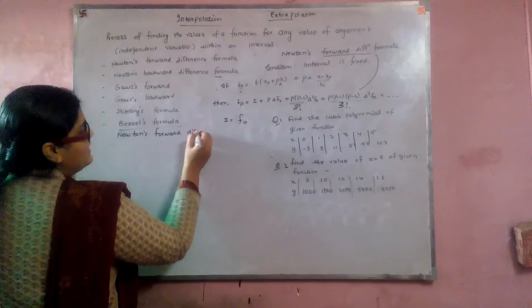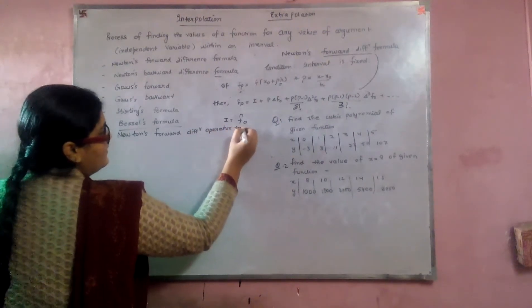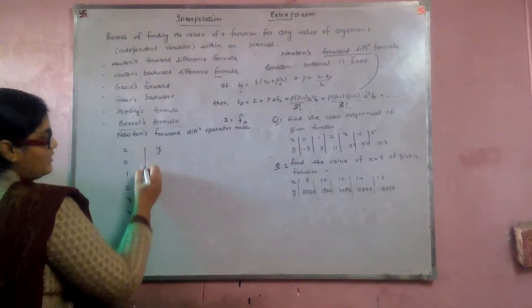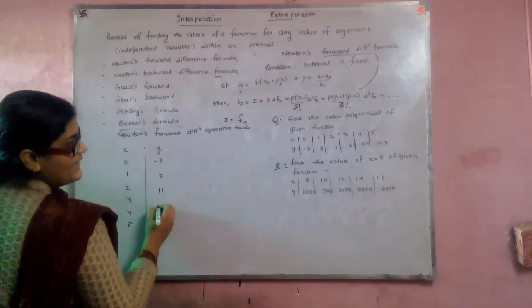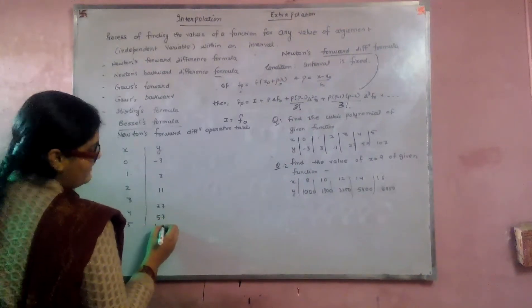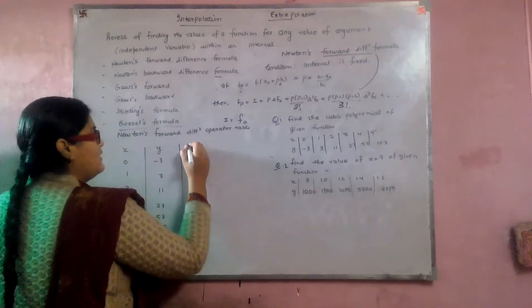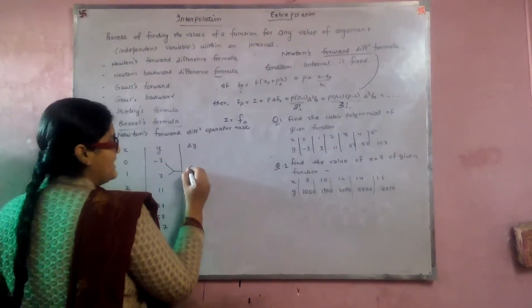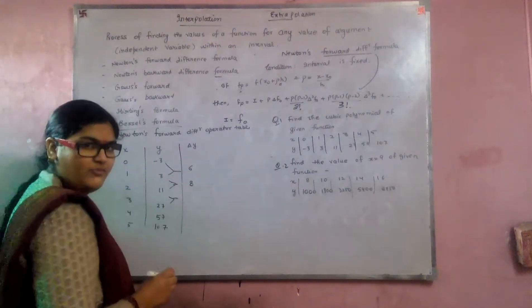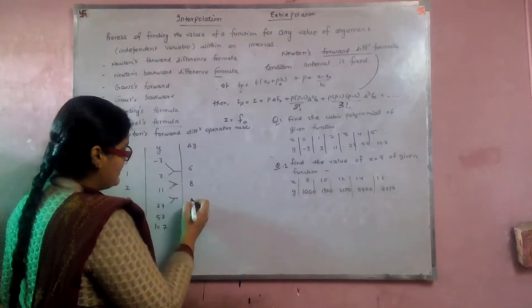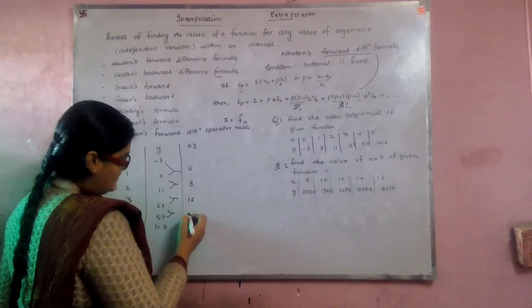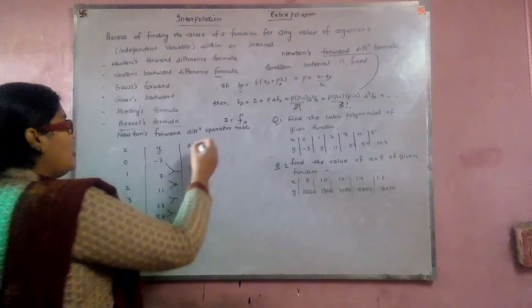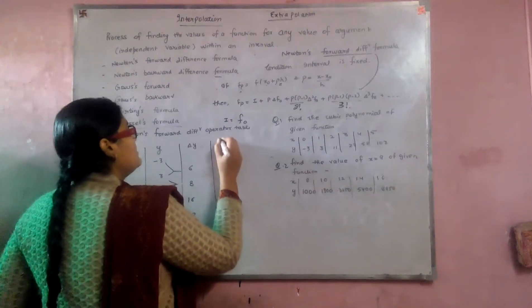The values of x are 0, 1, 2, 3, 4, 5 and the values of y are −3, 3, 11, 27, 57, and 107. For the first-order differences: 3−(−3)=6, 11−3=8, 27−11=16, 57−27=30, 107−57=50. These are all the values for the first-order difference operator.